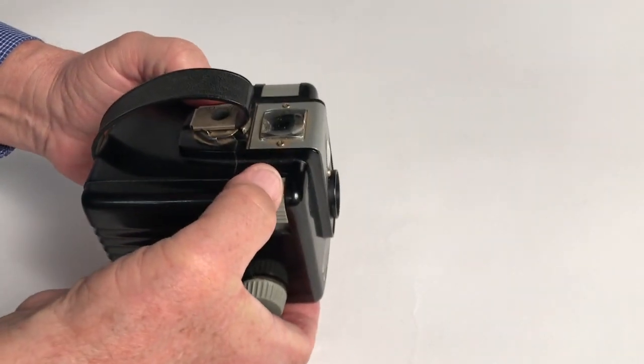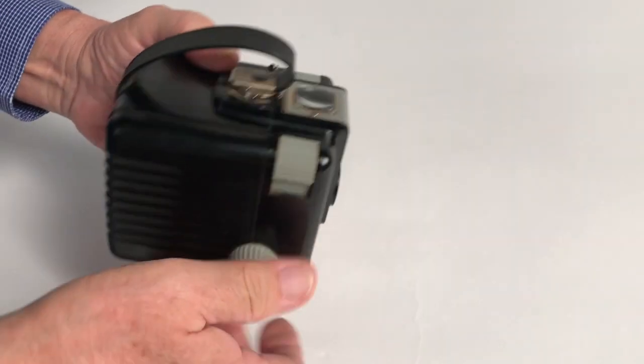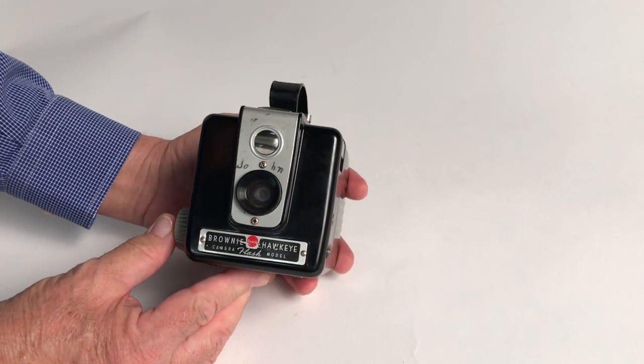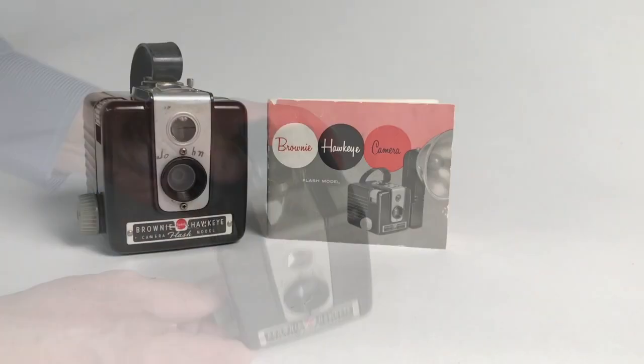And then we take a picture, advance it to number two, take a picture, advance it. There you have the Hawkeye 620, time period about the 1950s. Really takes some very neat pictures.